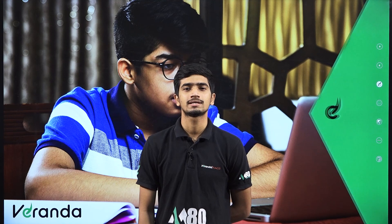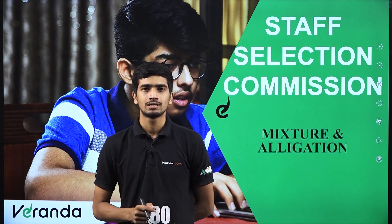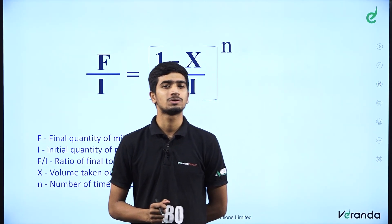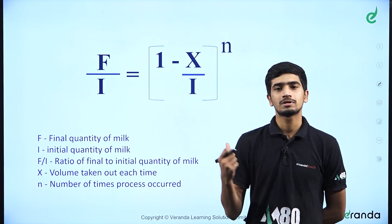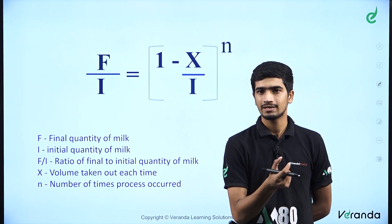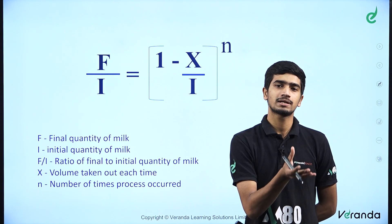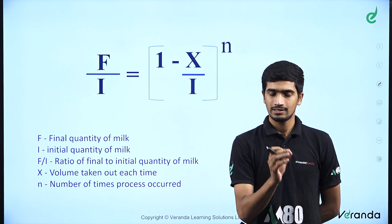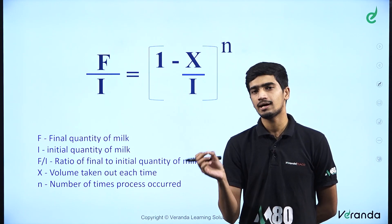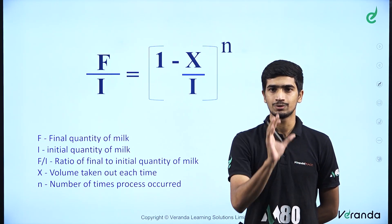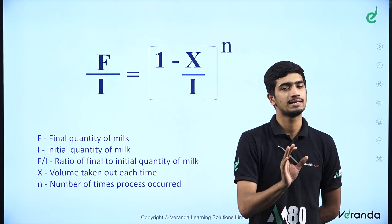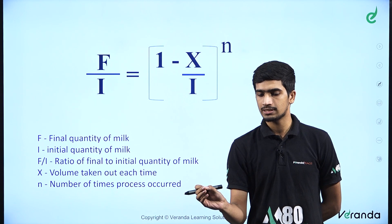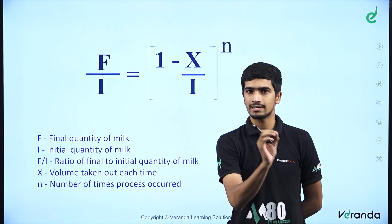Hello, welcome to the online session. This topic is a specific concept of dilution. Dilution involves a specific quantity of water. We have a specific amount of milk and water. Initially, we have a specific amount of milk — the container is completely filled with milk. We add a specific amount of water, resulting in a mixture of milk and water.